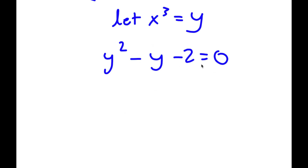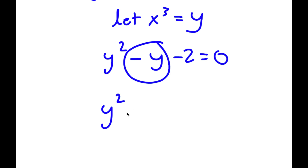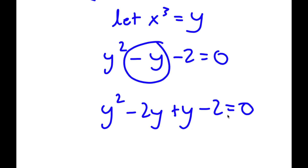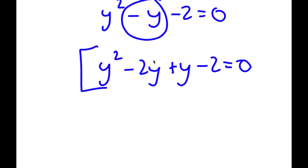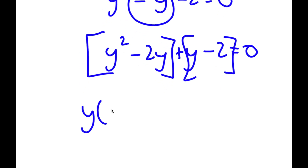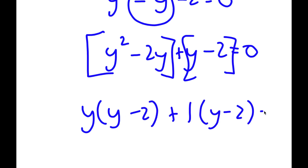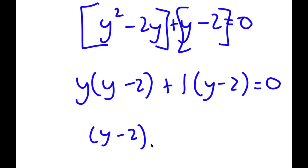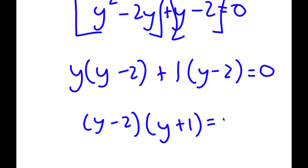Now we have a simple quadratic equation. To solve this, I'm going to write negative y as negative 2y plus y. Then I'm going to factor by grouping: factoring out y from y squared minus 2y, and factoring out 1 from y minus 2, since 1 is the greatest common factor. So I have y times y minus 2 plus 1 times y minus 2 equals 0. Factoring out y minus 2, I get y minus 2 times y plus 1 is equal to 0.